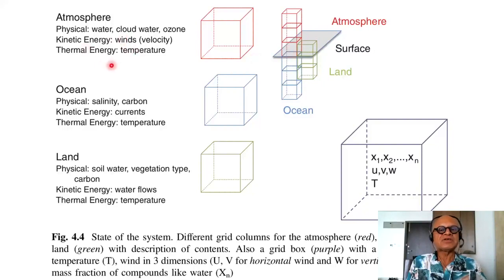In the atmosphere you have physical variables like water, cloud water, ozone. You have the components here: atmosphere, land, and ocean. They are all talking to each other. You have to worry about kinetic energy and thermal energy. In the ocean you have to worry about salinity, carbon, currents, and temperature. Ocean is being forced by the atmosphere in terms of winds dragging the water around and exchange of water through evaporation and precipitation and exchange of latent heat flux and sensible heat flux. The land has soil water, vegetation type, and carbon. The friction on land between the atmosphere, winds, and the land is different than on the ocean because water can move.